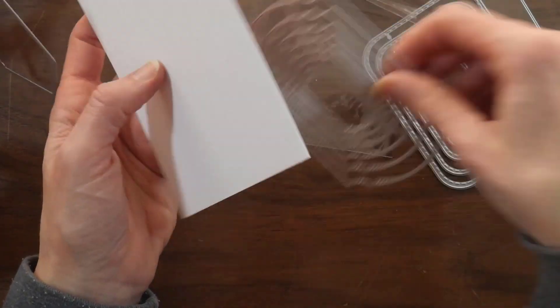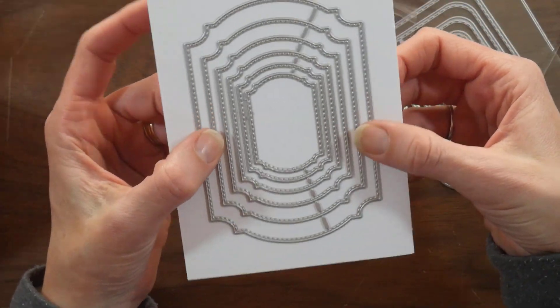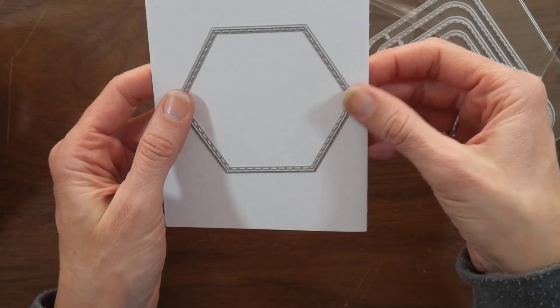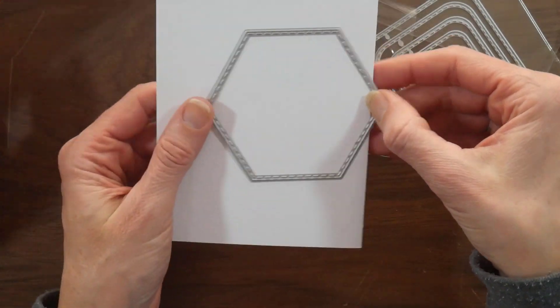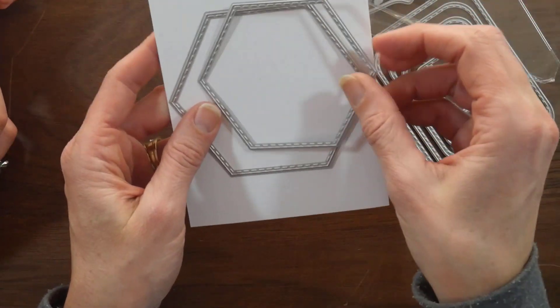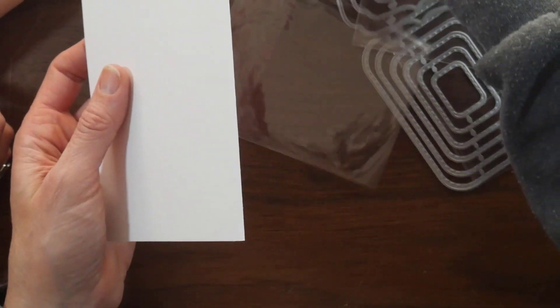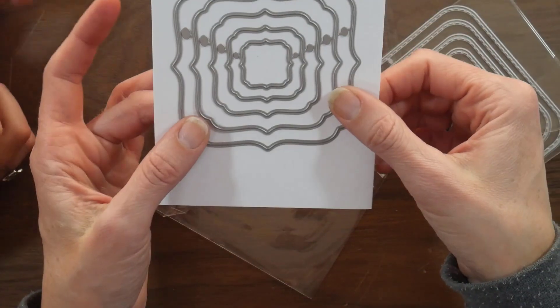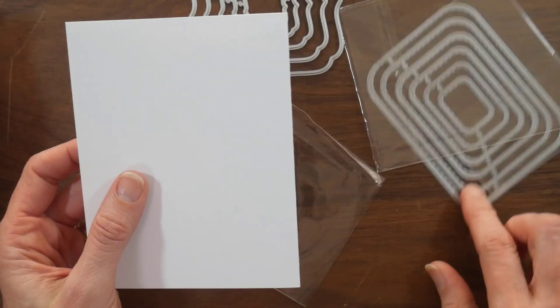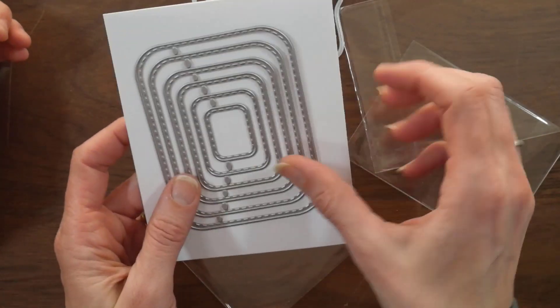And just to show you the size of these two on an A2 size card base. And here's the biggest hexagon. Oh no, here's the biggest. Sorry, she handed me the wrong one. This is the biggest. And then there's the, gosh, I keep going off camera here. Square thing rectangle.